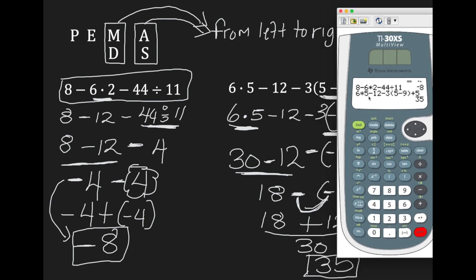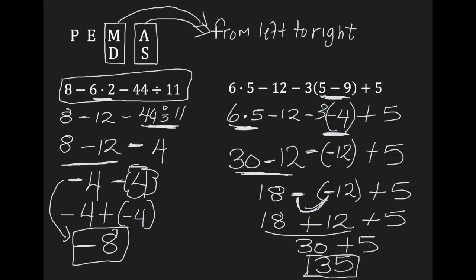Right there — 35. So when you have order of operations, just input as it was given to you into the calculator and you should get your answer. Input as you see it. Do not divert.